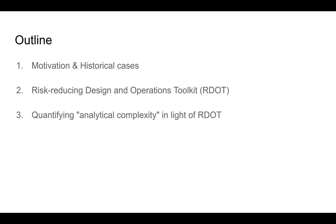In part two, I will talk about a toolkit of solutions to uncertainty that I call R.DOT — the Risk-Reducing Design and Operations Toolkit. I will then extend this further and introduce a notion of analytical complexity, namely how difficult it is to solve a given decision problem in light of R.DOT. I would like to argue that forecasting is not the decisive factor — there are other factors that could make a problem easier or harder to solve.